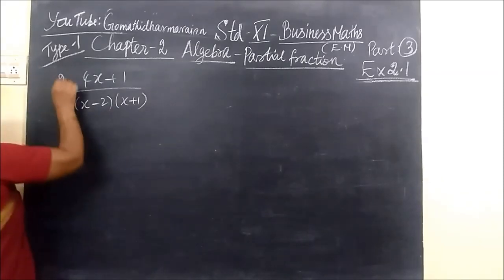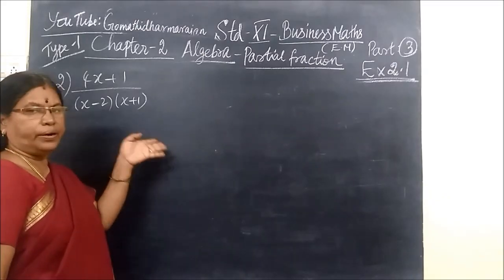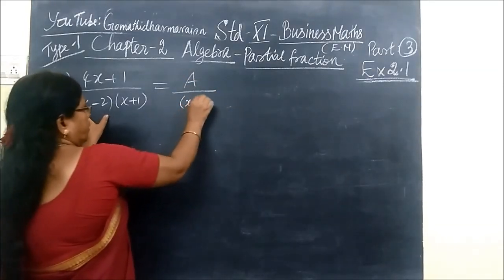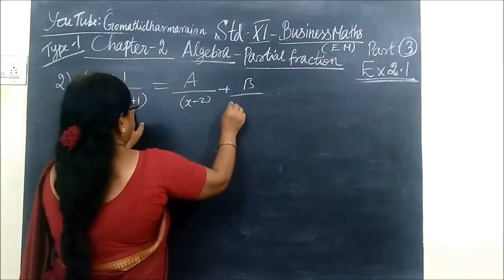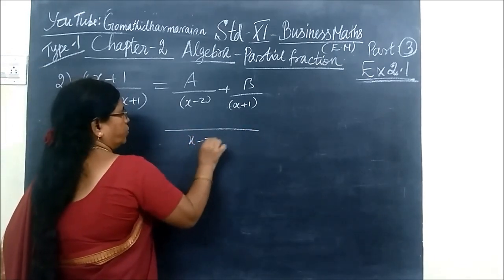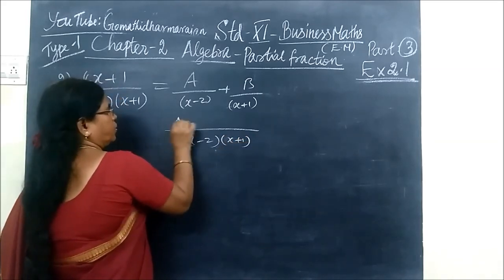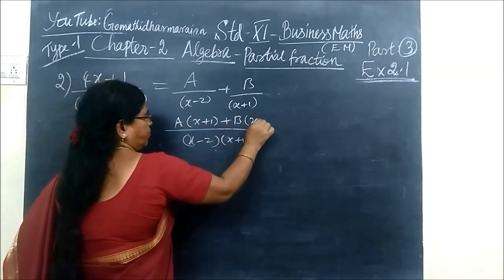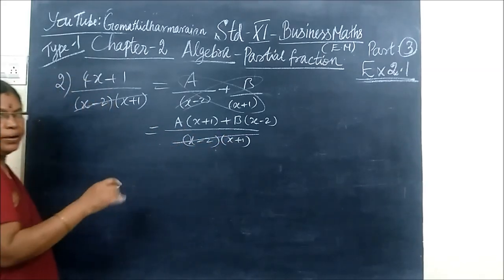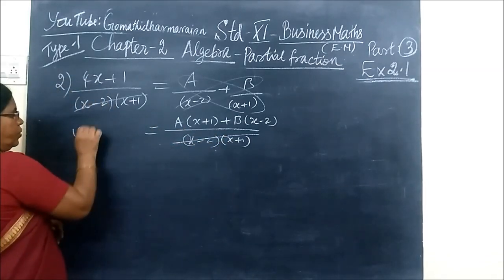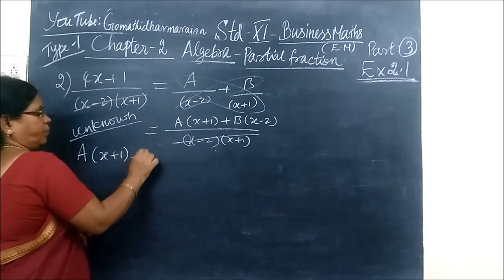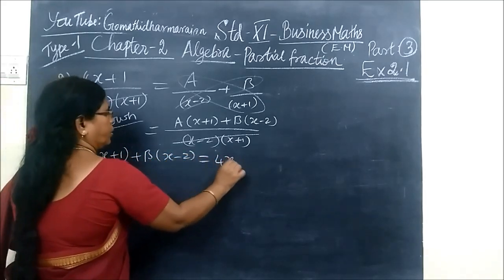We do one more sum. This is second question, 4x plus 1 by x minus 2, x plus 1. Denominator already factorized. So it is constant A by one factor, plus constant B by second factor. Now take the LCM, x minus 2, x plus 1. Cross multiply.